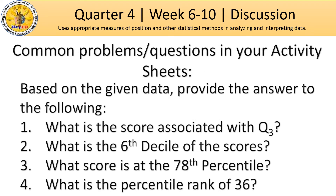Here are some common problems or questions in your activity sheets. From the given data, first: what is the score associated with Quartile 3? Or in other terms, you will be asked Upper Quartile, Lower Quartile, or other Quartiles. Second: what is the 6th decile of the scores? Third: what score is at the 78th percentile? And last: what is the percentile rank of 36?